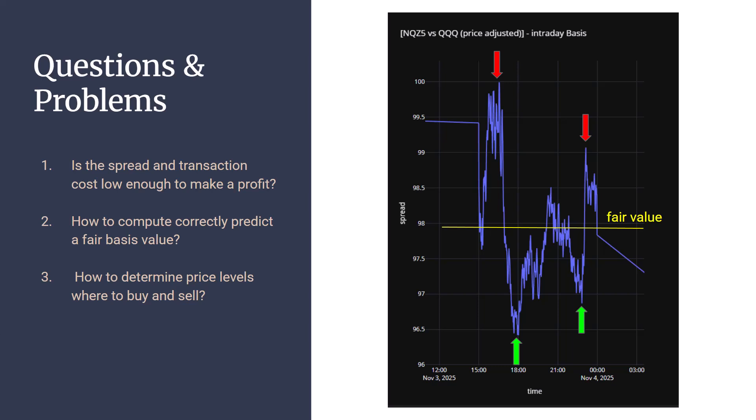Of course, this is not so easy. What are the potential problems and questions that arise when we want to trade such a strategy? The number one question or the main reason why this strategy might not work is because the spread and transaction costs may be too high to justify the profit. If you pay, for example, $2 on the spread on one side and then $2 on the spread on the other side, you're minus four. And if the intraday basis range is less than the transaction costs, then this strategy will not work.